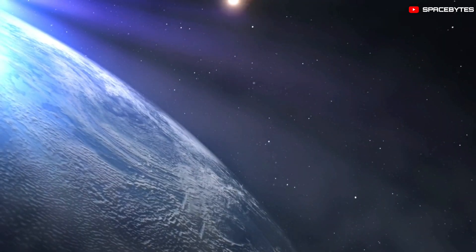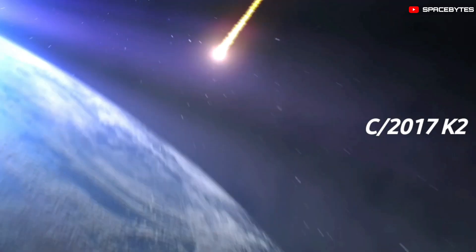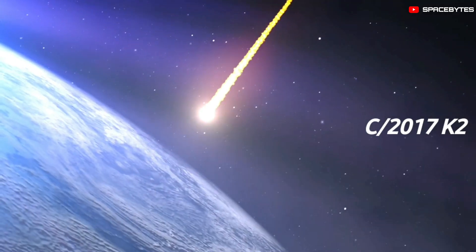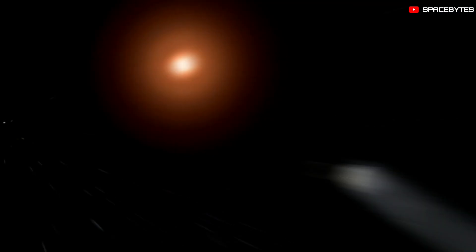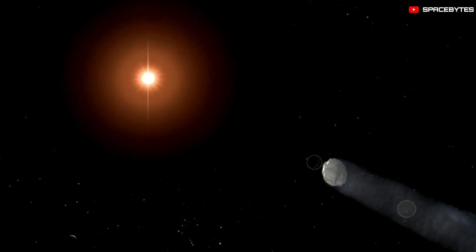This huge comet also dubbed as C-2017 K2 will make its closest approach to Earth on July 14 and will be close to the Sun on December 19.